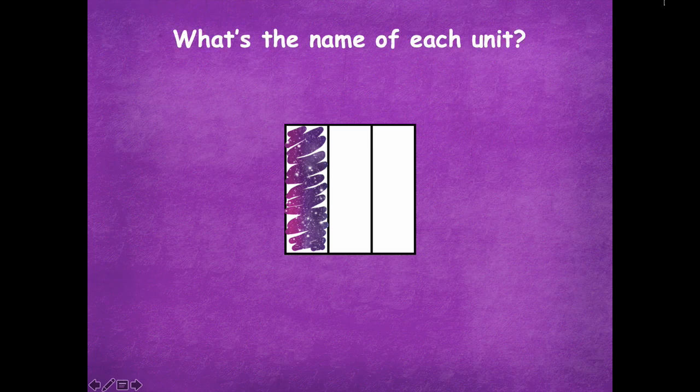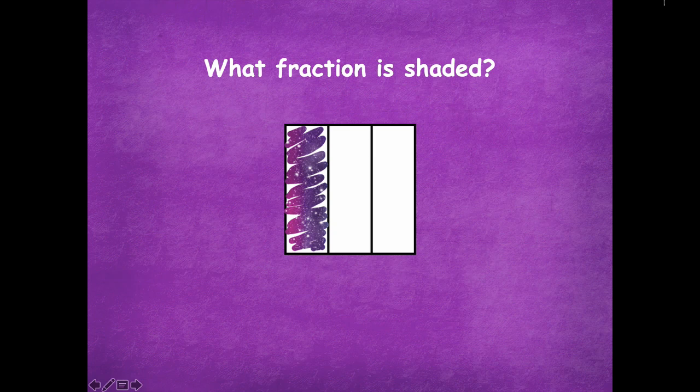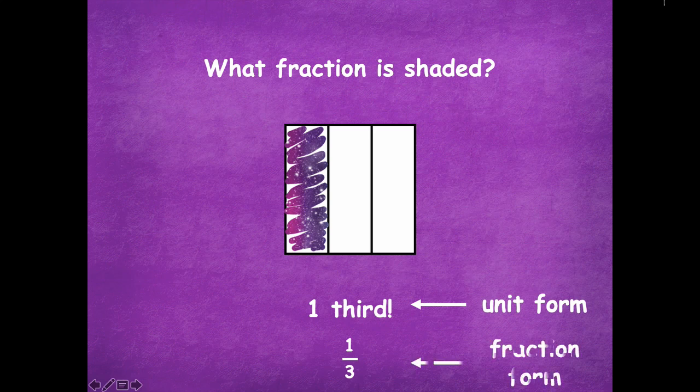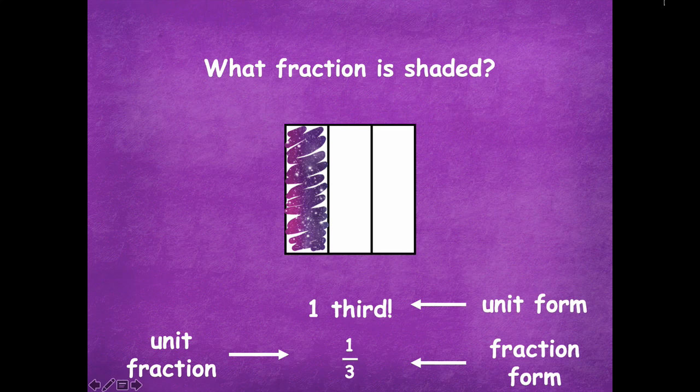What's the name of each unit? One third, right? Remember the fractional unit for this is thirds, because there's three equal parts. What fraction is shaded? So you can write it, or why don't you guys actually stop and write that on your board? You can write it numerically. How would you write that numerically? We know we would say one third, right? So we would write it numerically like this, because one part is shaded, and the numerator, that's the top number, that's one part is shaded, and the bottom number is the denominator, and that is the total number of parts. So that's how you represent one third. Again, this is the unit form, this is the fraction form, and this is also a unit fraction, because it's one part.